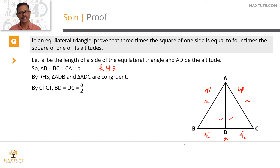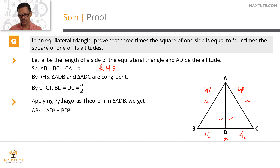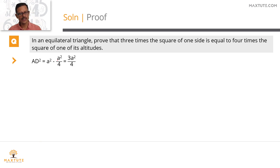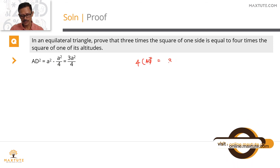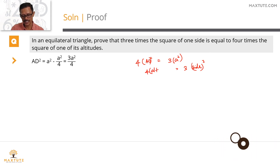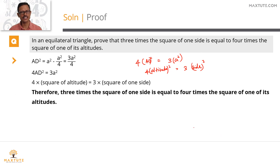Applying the Pythagorean theorem in right triangle ADB: AB² = AD² + BD². Substituting AB = A and BD = A/2: A² = AD² + (A/2)², so AD² = A² − A²/4 = 3A²/4. Cross-multiplying: 4 × AD² = 3 × A². Since A is the side and AD is the altitude, this means 4 times the square of the altitude equals 3 times the square of the side — which is what we wanted to prove.